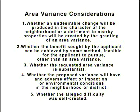Number one, whether an undesirable change will be produced in the character of the neighborhood, or a detriment to nearby properties will be created. Number two, whether the applicant has other feasible alternatives. Number three, whether the variance is substantial. Number four, whether an adverse impact on the environment will be created. And number five, whether the alleged difficulty is self-created.